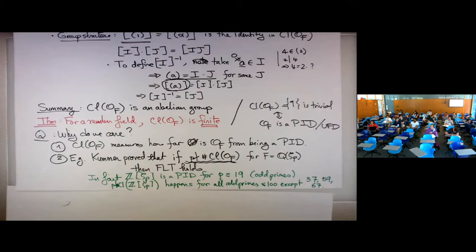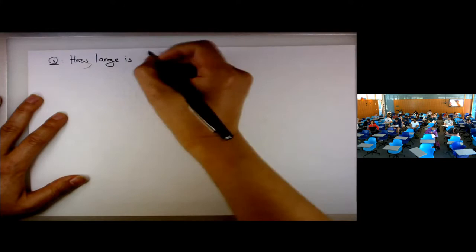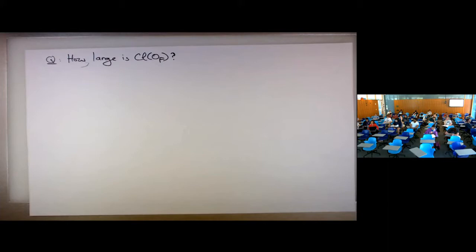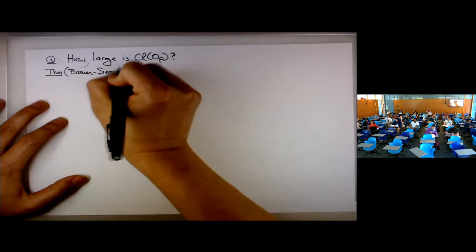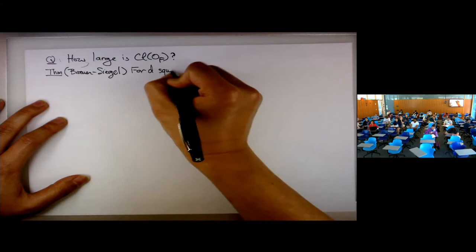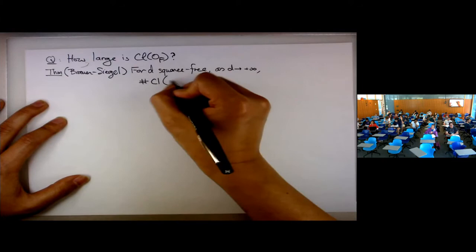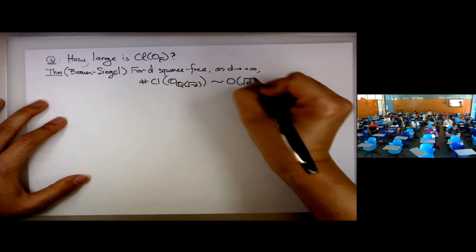Unfortunately, we don't know whether there are infinitely many regular primes, though numerically among small primes we see many regular primes, which allowed Kummer to prove Fermat's Last Theorem for many cases. This is a great achievement from about a hundred years ago.